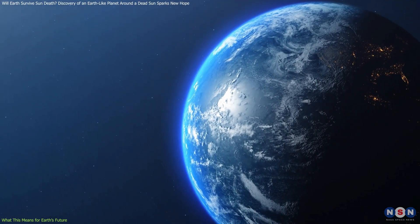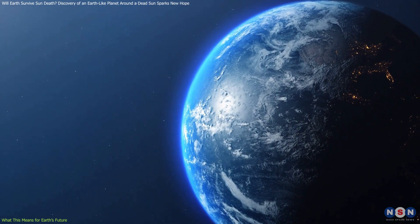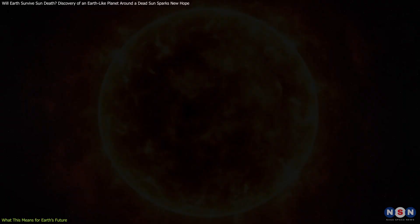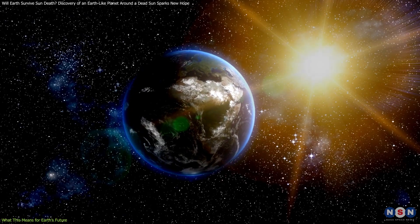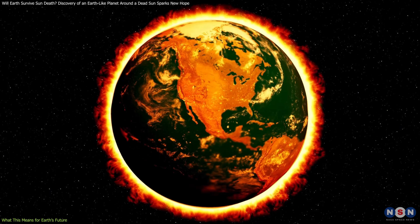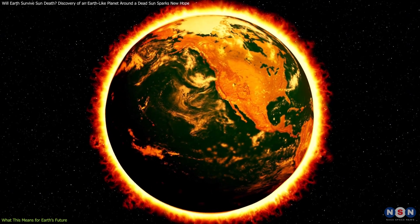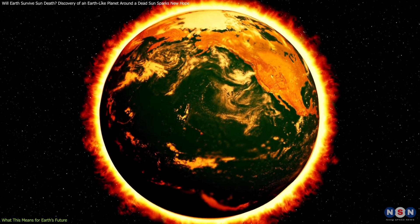Currently, Earth is expected to remain habitable for about another 1 billion years as the Sun gradually increases in brightness. This increase will cause Earth's oceans to evaporate, making the planet too hot for life long before the Sun even begins its red giant phase.